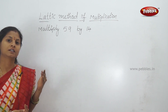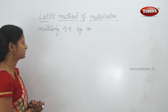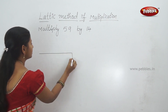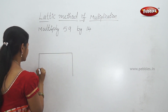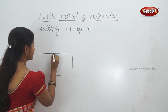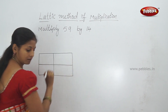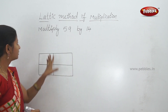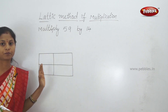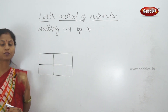In the lattice method, we also have the same boxes. In the lattice method, we will draw 4 boxes — the same as in the normal box method. We will draw 4 boxes.